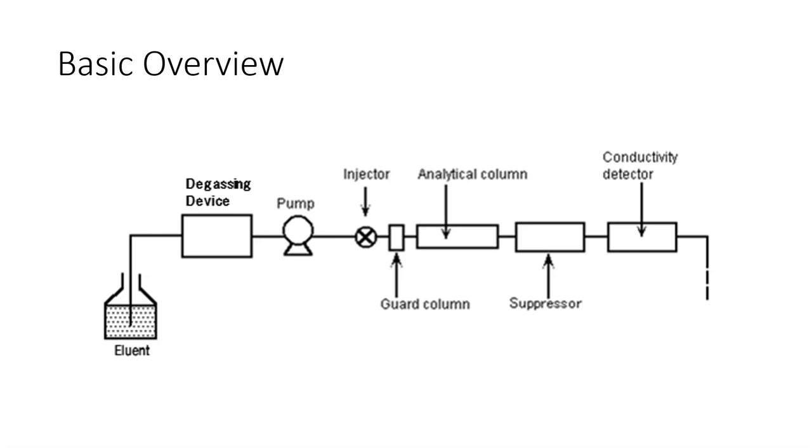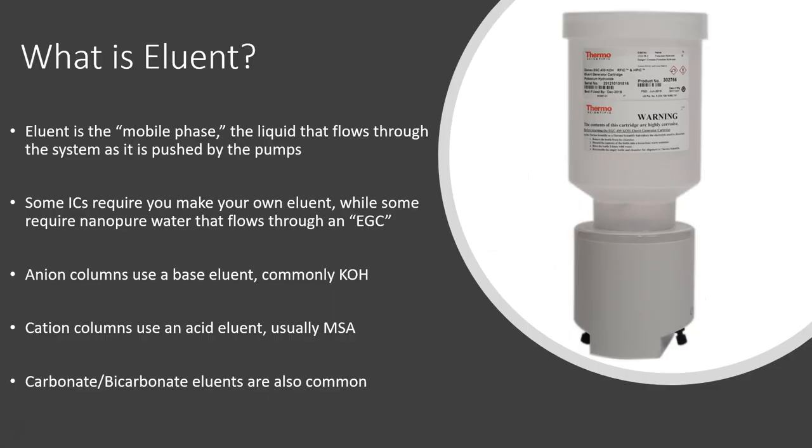First let's talk about the eluent. So what is eluent? Eluent is the mobile phase. This is the liquid that flows through the system as it's being pushed by the pumps. Some ICs require that you make your own eluent, while some require nano pure water that flows through an EGC.